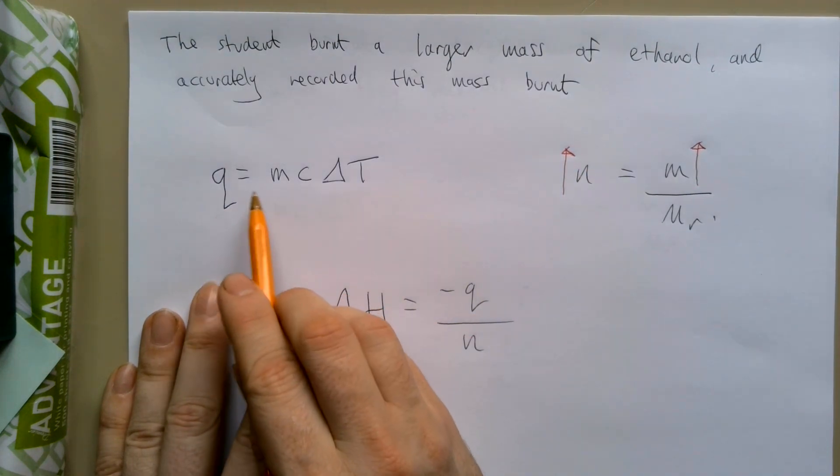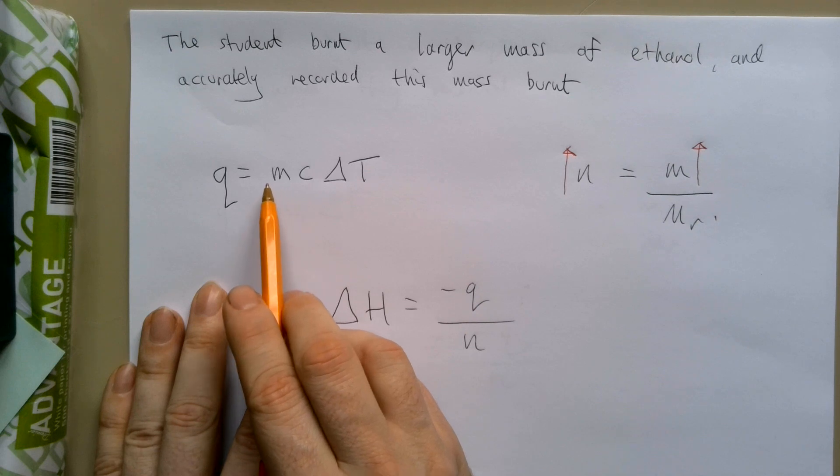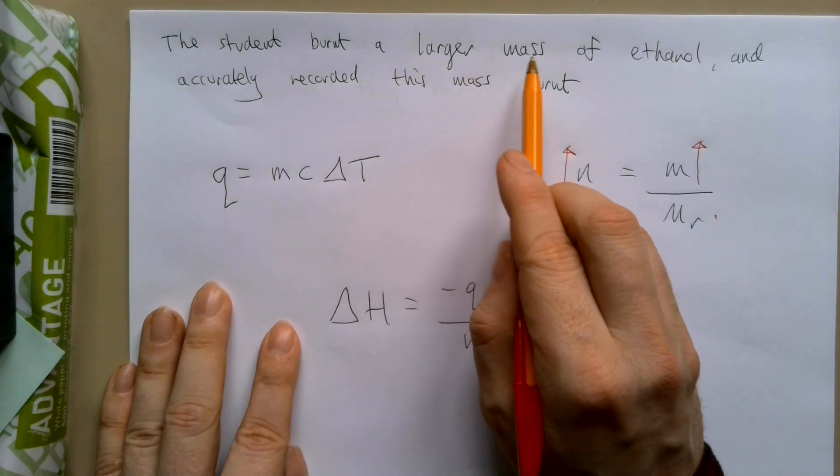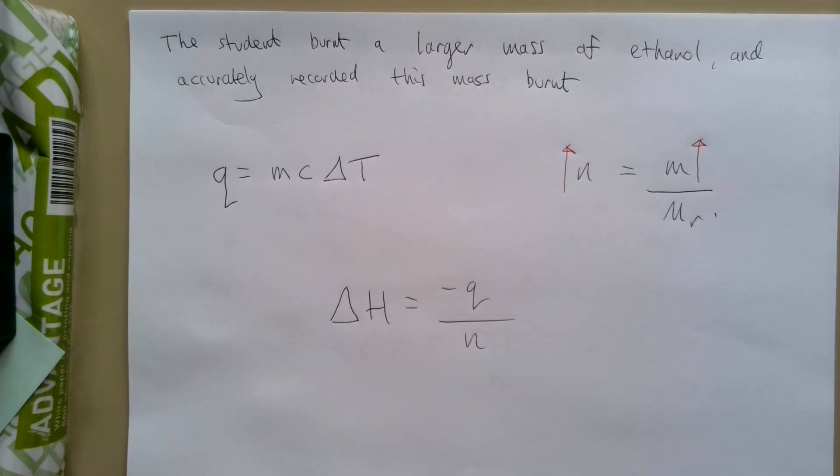Let's do the same for heat equals mc delta T. I'm going to ask you to stop the video for a second. Have a think about which of these values would be affected by burning a larger mass of ethanol. Once you've finished with that, restart the video and I'll go through it.